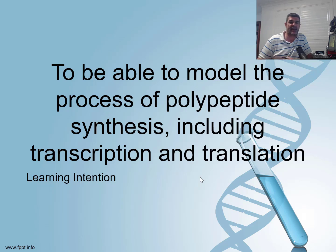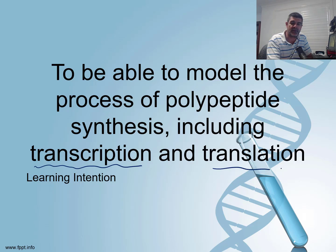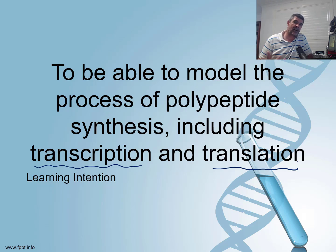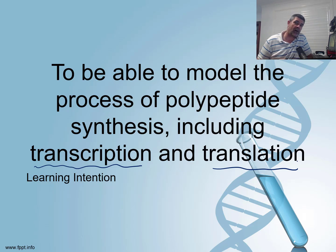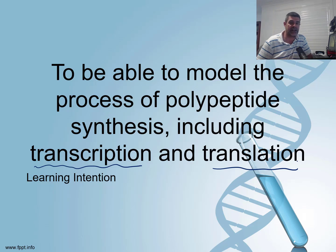There are a couple of different aspects we're going to be looking at under the general headings of transcription and translation. We're going to be looking specifically at the role of RNA and different types of RNA, and also the fact that we've got a message that we're trying to get from one place in the cell to another using a completely different type of code. In this video I'm going to overview these two processes, and then we'll look at the specific types of ribonucleic acids involved in message transfer in the next video.